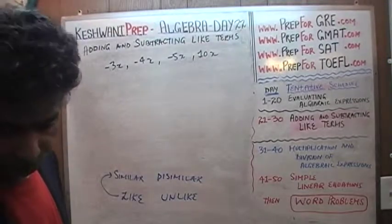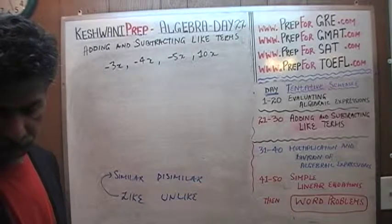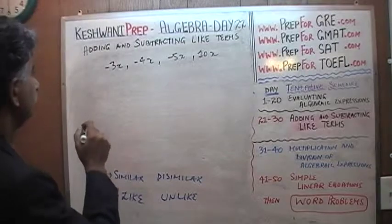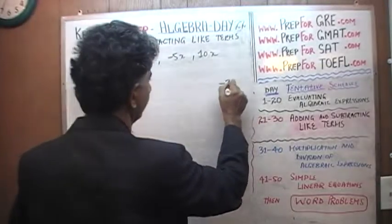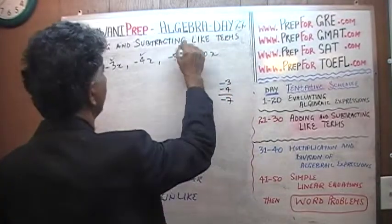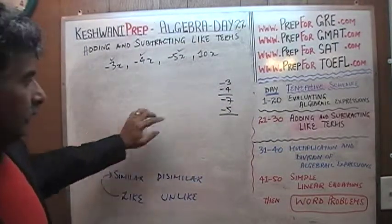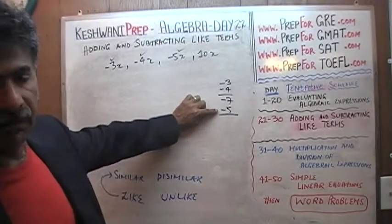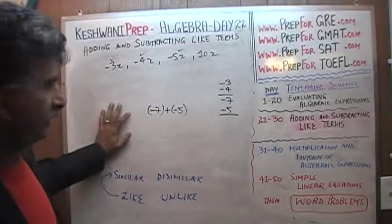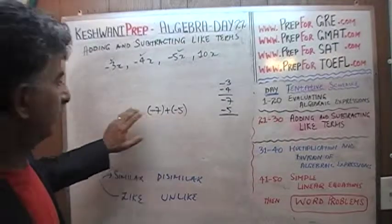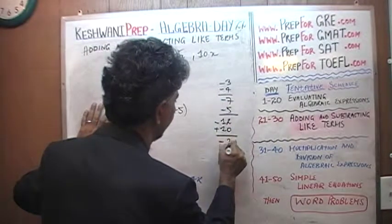Since 10x has no sign in front of it, it is positive 10x. The question is: how many x's do we have? We have negative 3 and negative 4, which is negative 7. Then we add negative 5 to negative 7 — in algebra we talk about adding negative 7 and negative 5. Negative 7 plus negative 5 gives us negative 12.